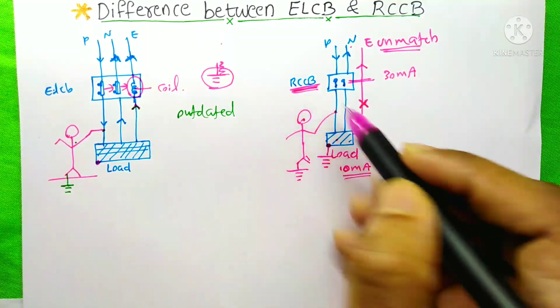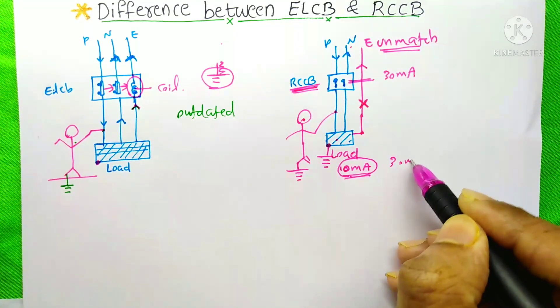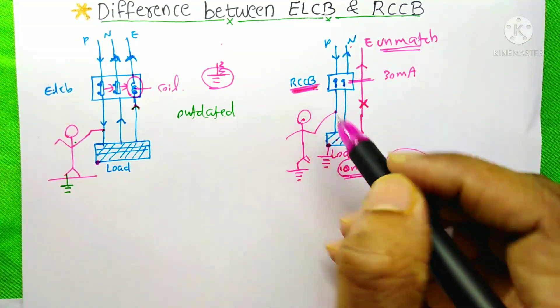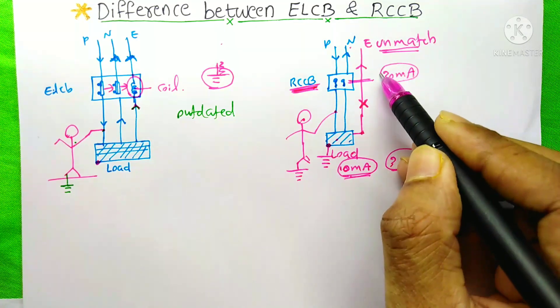At this time, the RCCB will not trip. Instead of this 10 mA, if it is 30 mA or more than this 30 mA, then this RCCB will trip. You know, in our homes, we usually use this 30 mA.